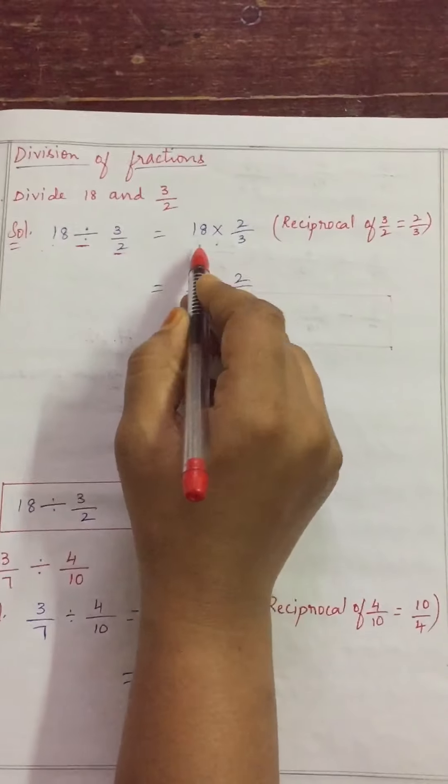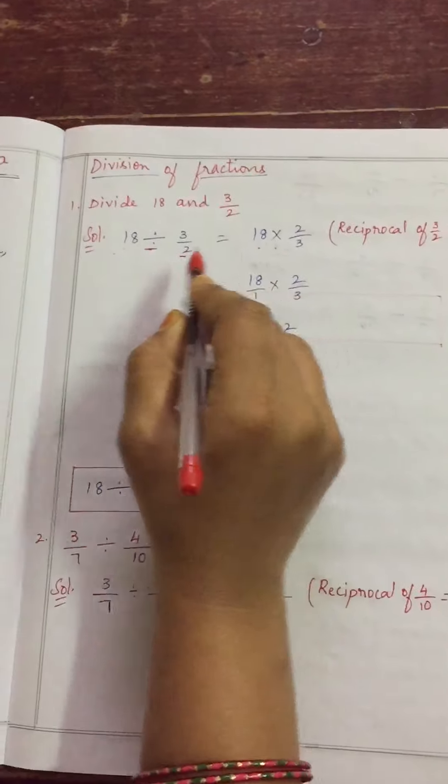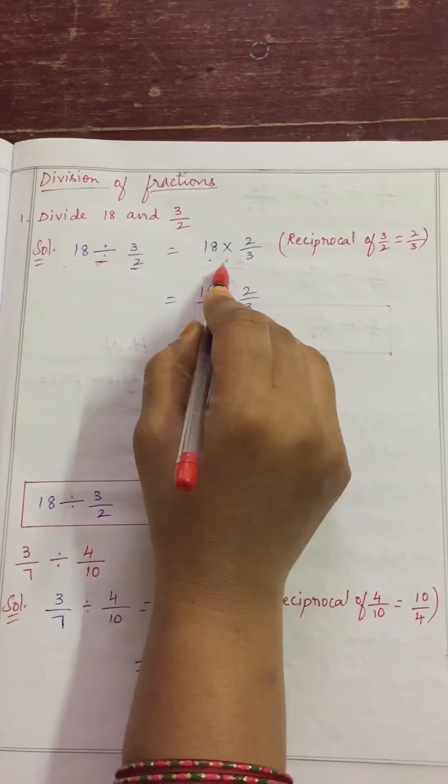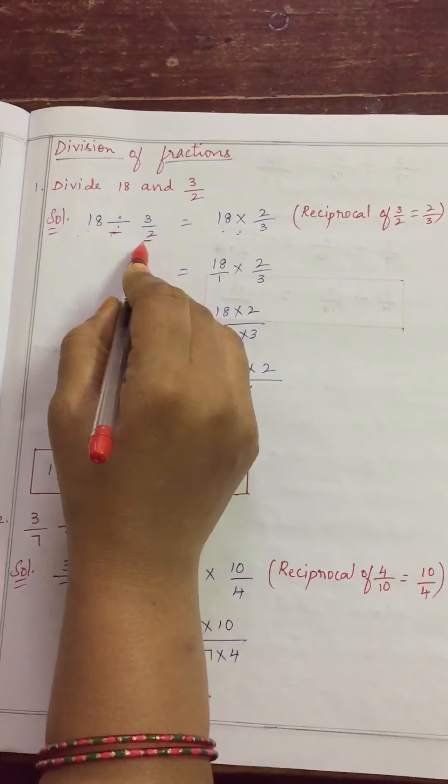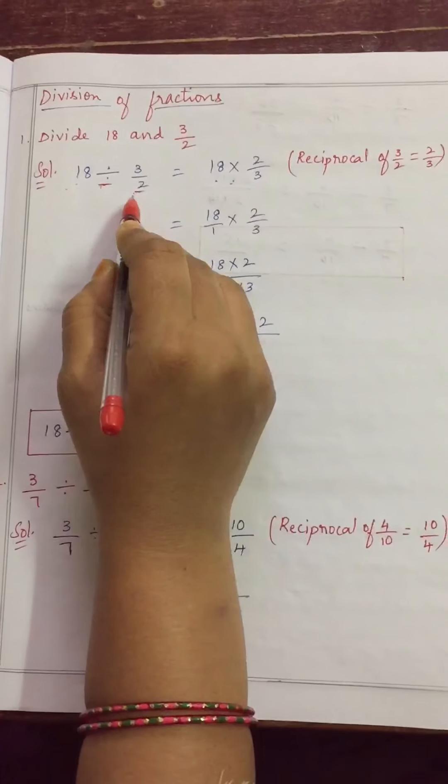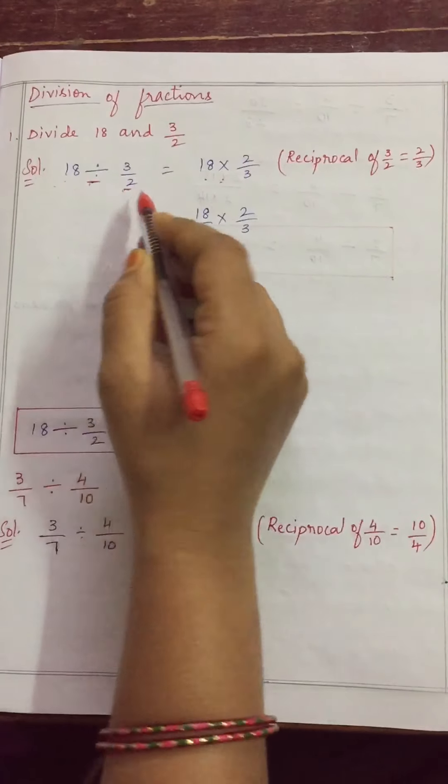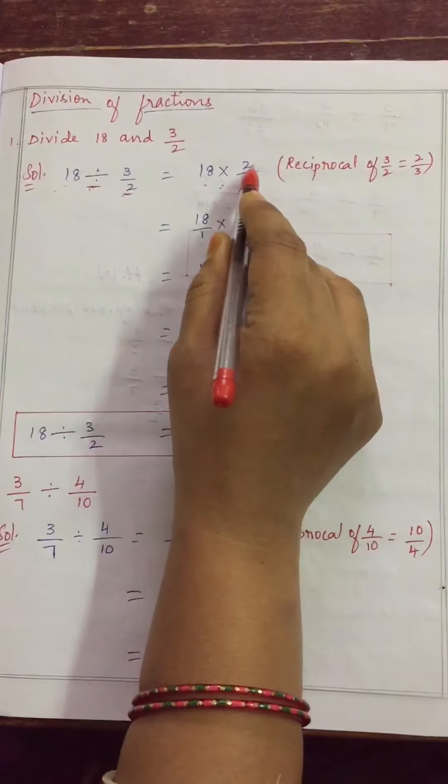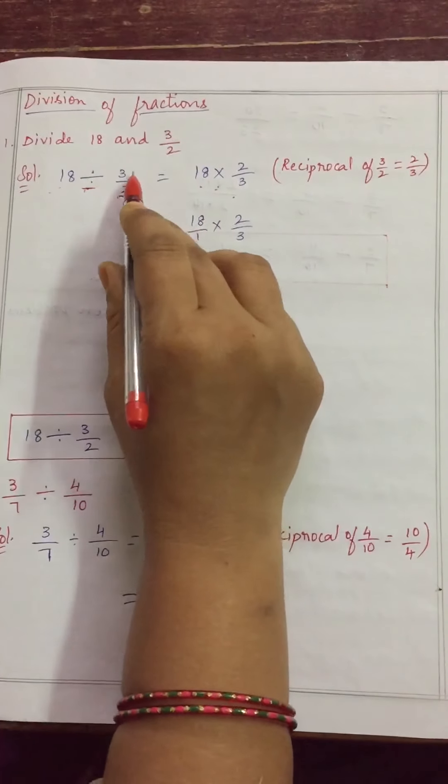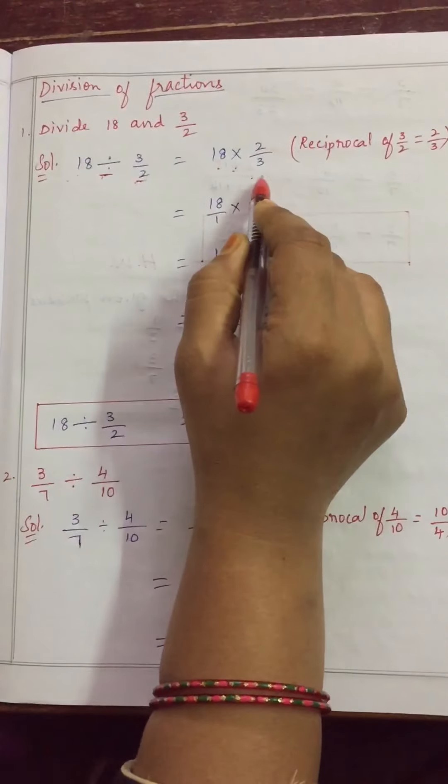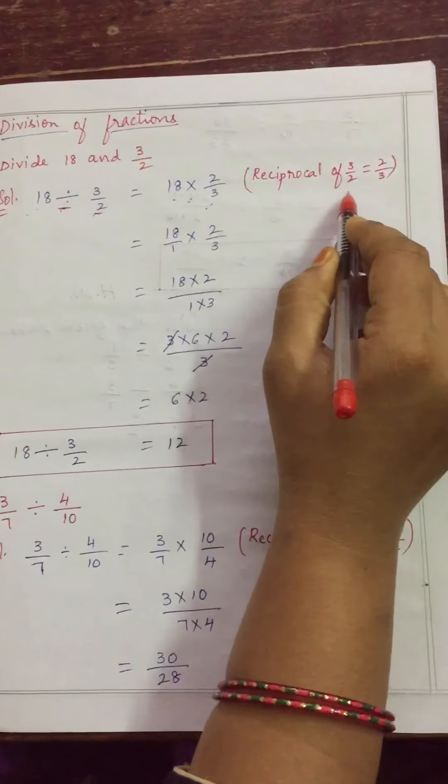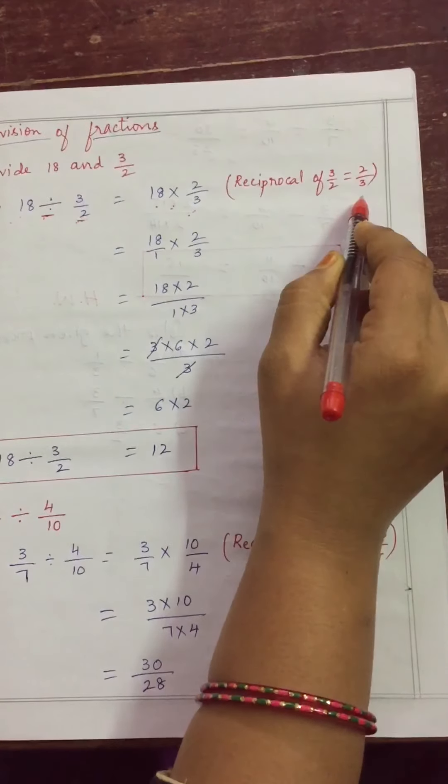First number or first fraction as it is we will write, division become multiplication, and this second number or second fraction we will take as reciprocal, reverse of that number. 3 by 2 reciprocal is 2 by 3. Numerator become denominator, denominator become numerator, that only the reciprocal. See, reciprocal of 3 by 2 is nothing but 2 by 3.